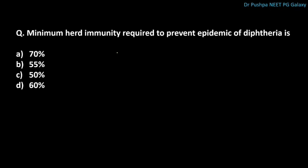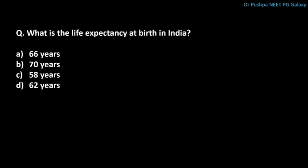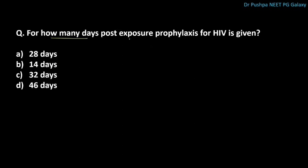Minimum herd immunity required to prevent an epidemic of diphtheria is 70%. The most commonly used family planning method in India is female sterilization. What is the life expectancy at birth in India? The correct answer is 66 years. What is the target for infant mortality rate in the 12th Five Year Plan? The correct answer is 25. For how many days is post-exposure prophylaxis for HIV given? The correct answer is 28 days.